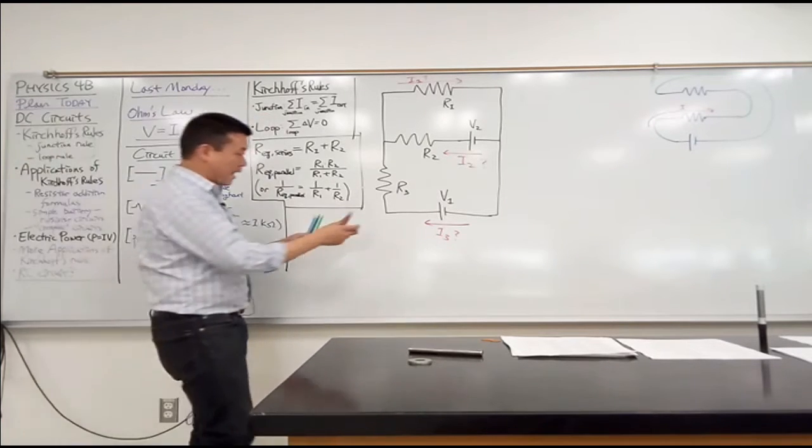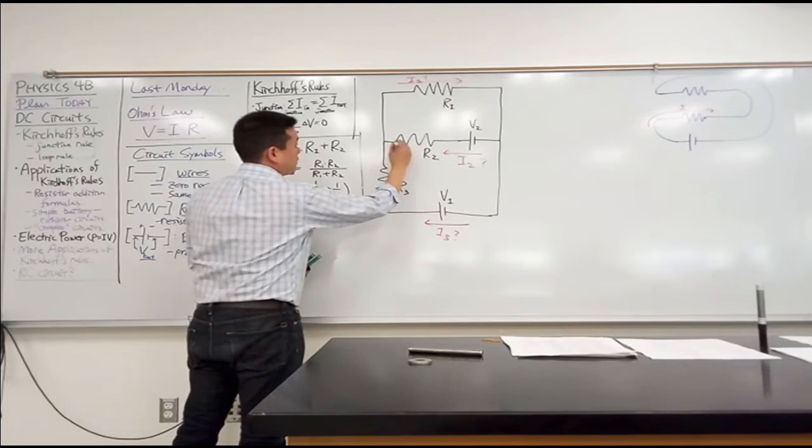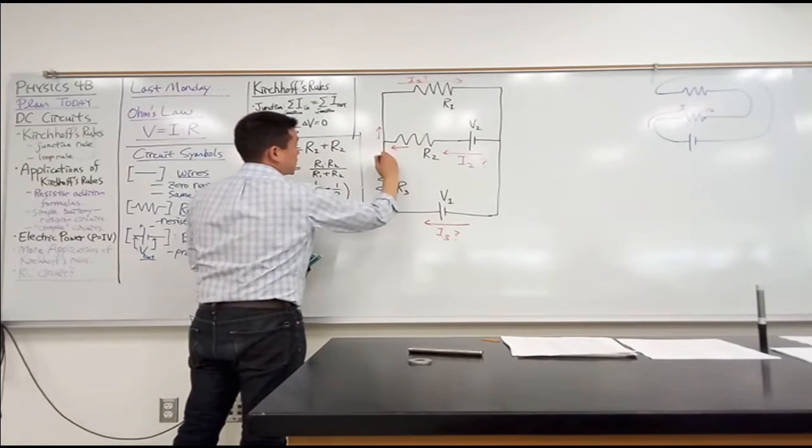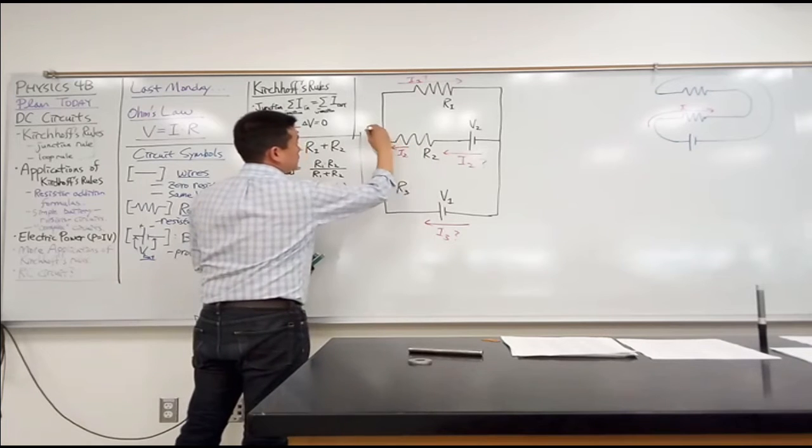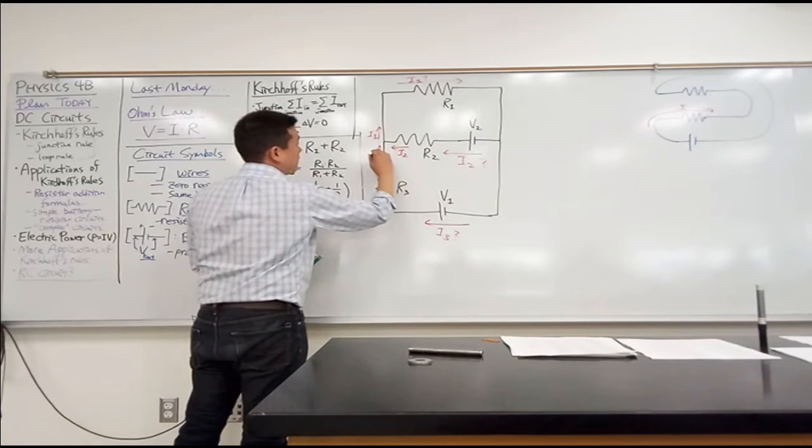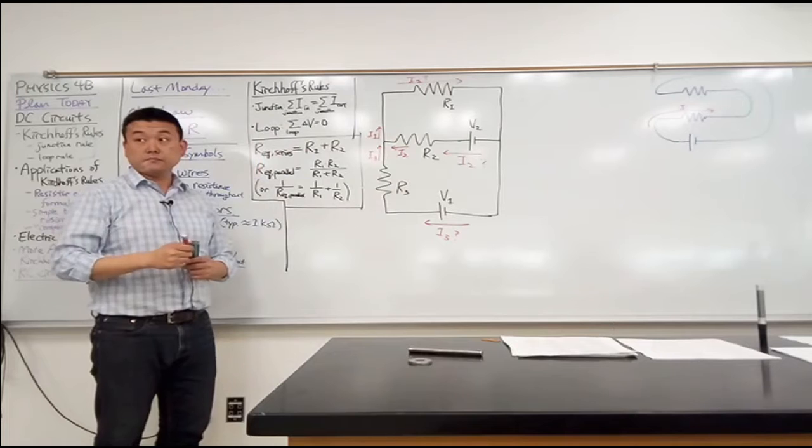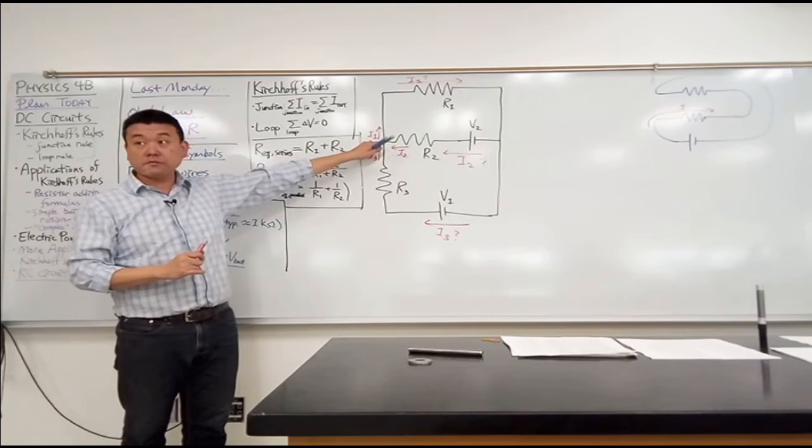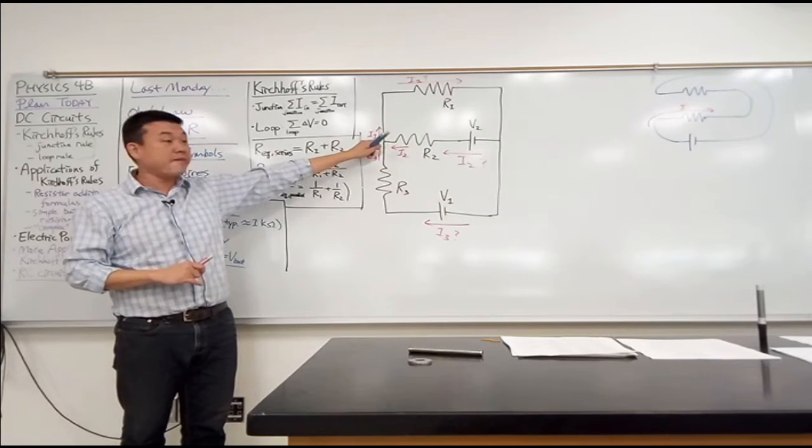So, you know, I2, I3, and I1, they all meet together in this junction. This is I2. This is I1. This is I3. So, can you say that I2 is equal to I1 without knowing anything more? Why not?